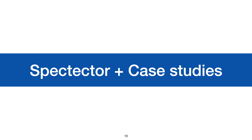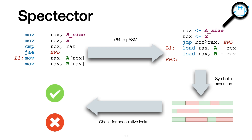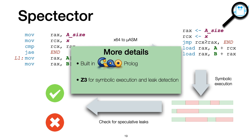To conclude, I would like to present Spectator, our tool for automatically proving speculative non-interference, and two case studies. Spectator consists of a front-end that translates x64 assembly programs into micro-assembly, an assembly-style intermediate language, and a back-end implementing the analysis process I mentioned before. Namely, the back-end implements both the concolic execution engine for executing programs with respect to the speculative semantics, and the checks for speculative leaks. The tool is implemented in the Ciao Prolog language and relies on the Z3 SMT solver for symbolic reasoning.